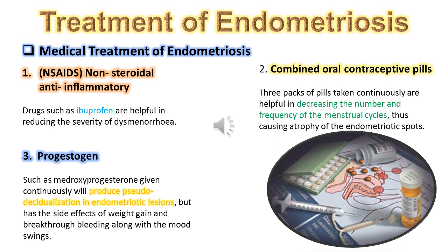Number 3: Progesterone, such as medroxyprogesterone, given continuously, will produce pseudo-decidualization in endometriotic lesions, but has the side effects of weight gain and breakthrough bleeding along with mood swings.